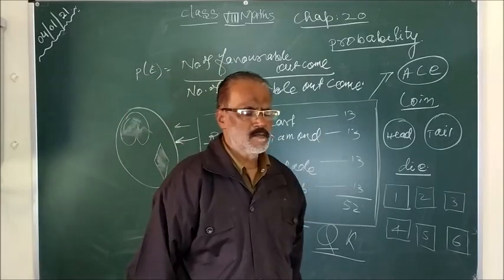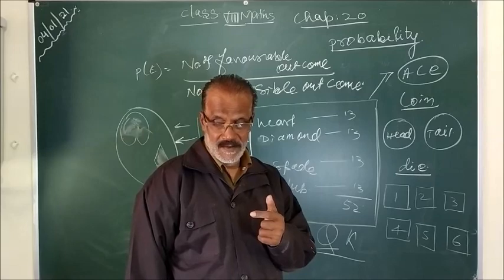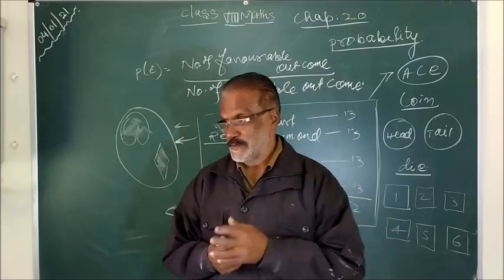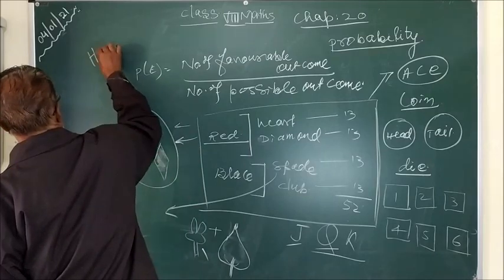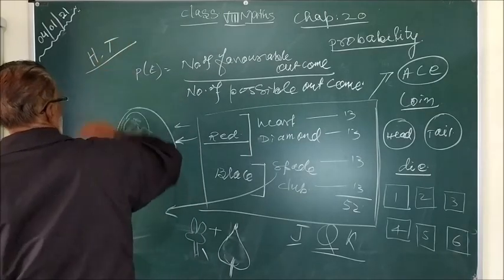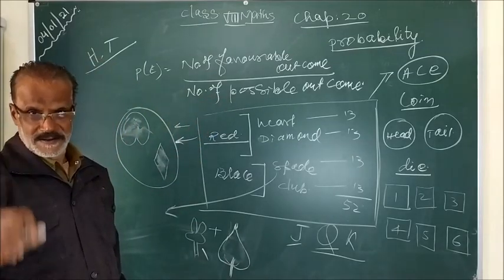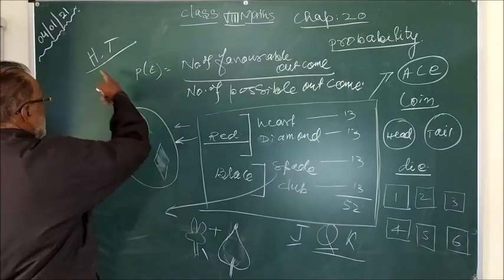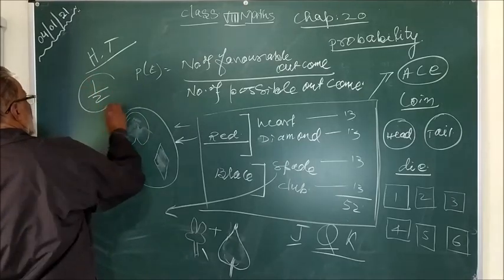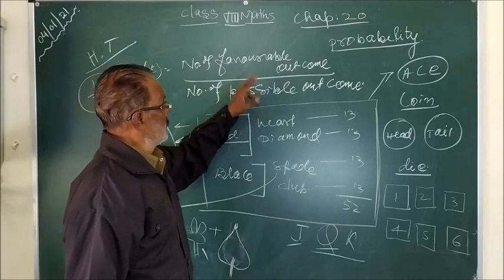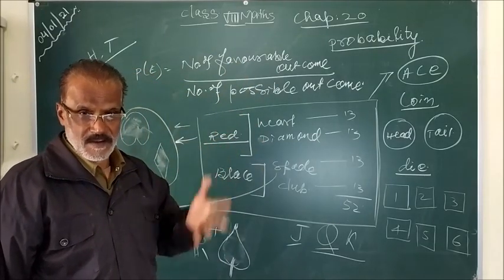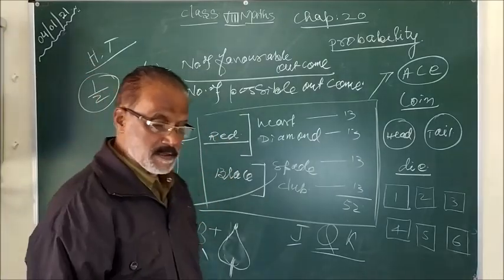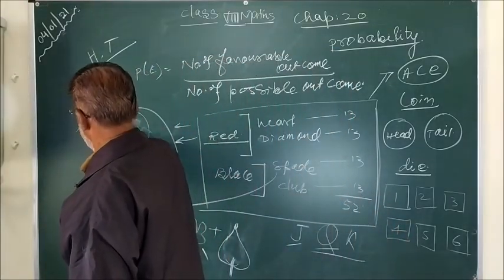Suppose if you toss a coin, what is the probability of getting head? So there are 2 possibilities, head and tail. This is the possible outcome. Only 2 possibilities, either head or tail. No other option. So if you have one, it's called 1 by 2. Because possible outcome is 2. Favorable? What is the question? You have to answer. What is the probability of getting head? 1 by 2. If I ask you what is the probability of getting tail? Also it is 1 by 2.